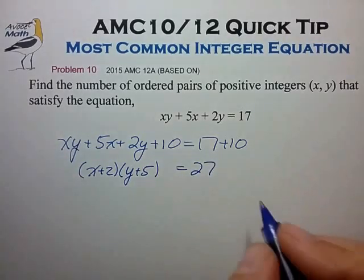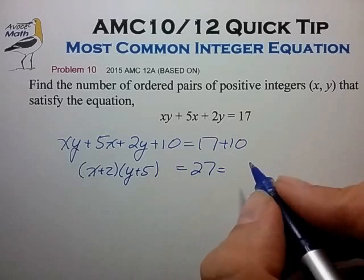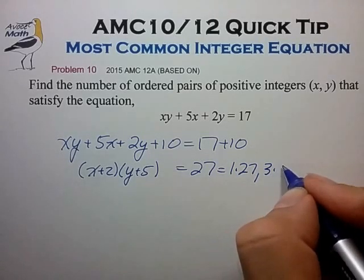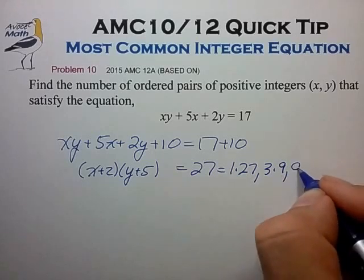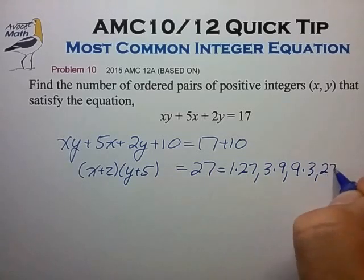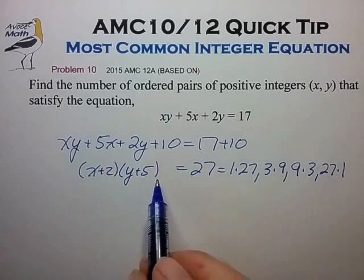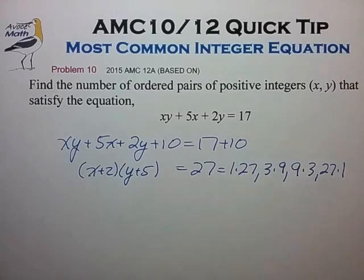On the right side, we write 27 as all possible factor pairs. The idea here is to use the fundamental theorem of arithmetic to compare the factor pair on the left to all the possible factor pairs on the right.